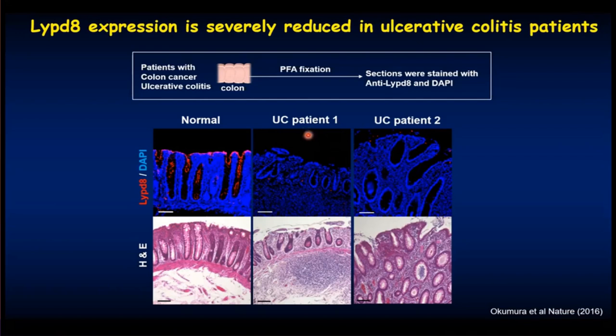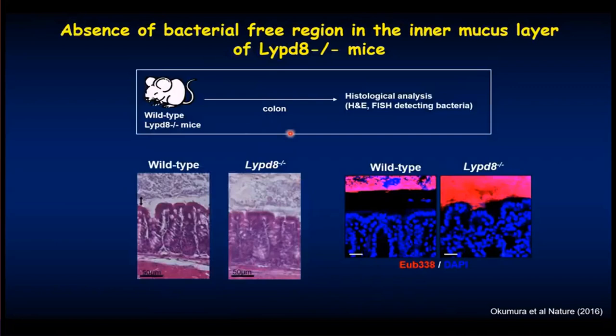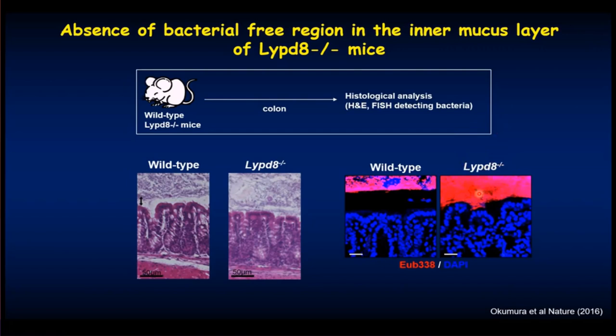Our next question was the role of LYPD-8 in the colon. We generated knockout animals. In the wild-type colon, a bacterial-free region can be observed just above the colonic layers. But in LYPD-8 knockout animals, stained microbiota attach or invade into the colonic tissues, although the Muc2 mucins are normally present. Thus, in the absence of LYPD-8, bacteria invaded into the colonic tissues, and these knockout animals were highly sensitive to intestinal inflammation.